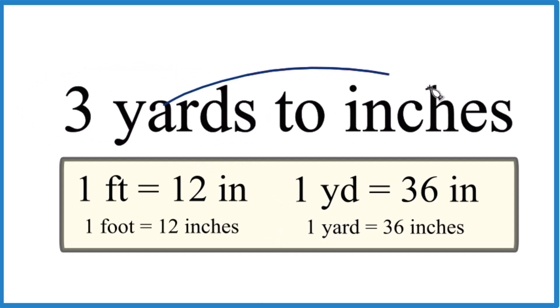So when we go from yards to inches, what you need to know is that one yard is 36 inches. You might remember one foot, that's 12 inches, and there's three feet in the yard. So three times 12, that's where we get that 36.